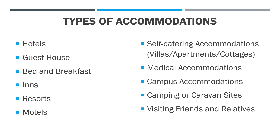Lastly, we have VFR, or visiting friends and relatives. This is actually common here in the Philippines. VFR usually provides free accommodation service to friends and relatives. Nowadays, there is also an international group where people contact friends in other countries and ask for free accommodation, or some pay a very minimal amount to be accommodated at the destination. So those are the types of accommodations that we have.